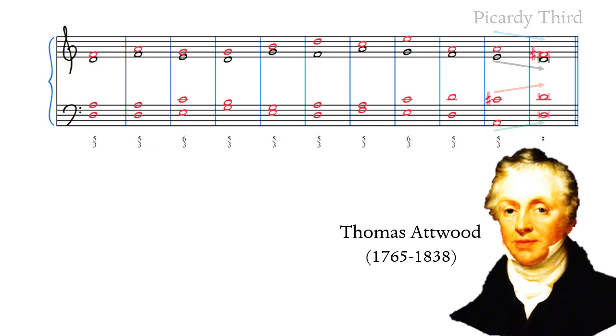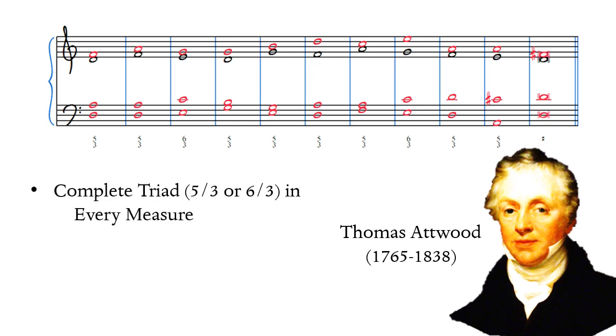Looking back at the rest of the exercise, we notice that there is a complete triad, either a 5-3 chord or a 6-3 chord, in every measure. Back when we were writing with only three voices, we had to make do sometimes with 8-3, 8-5, and 8-6 chords, which you can think of as incomplete triads. A triad has only three notes, and with access to four voices, there will no longer be a need to use an incomplete triad.